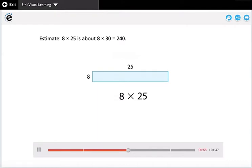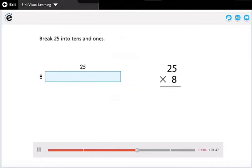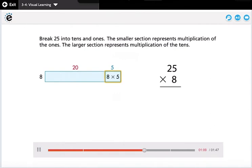8 times 25 is about 8 times 30 equals 240. Break 25 into tens and ones. The smaller section represents multiplication of the ones, the larger section represents multiplication of the tens. 8 times 5 equals 40. 8 times 20 equals 160.